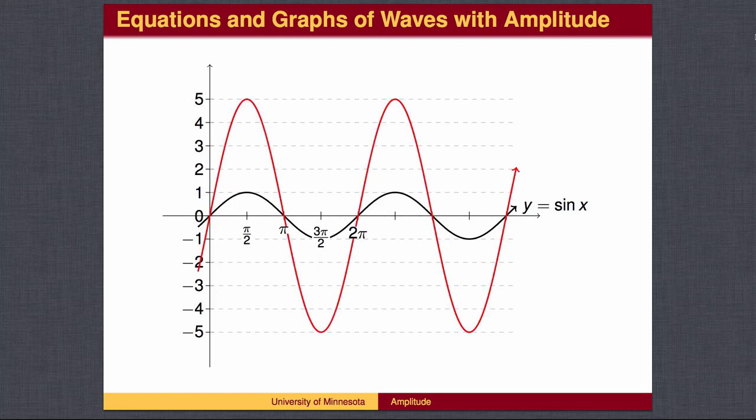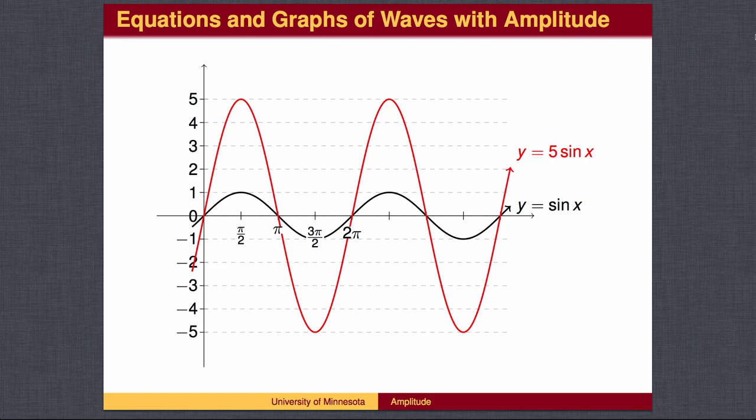In red is a graph whose waves go up to a height of 5 and down to a depth of negative 5. Is it a sine wave? Yes. The x-intercepts are the usual 0, pi, 2 pi, etc. It repeats every 2 pi. The wave reaches its peak at pi over 2. It is merely a sine wave that is 5 times as tall as usual. What is its equation? The amplitude is 5, so the equation is y equals 5 times the sine of x.